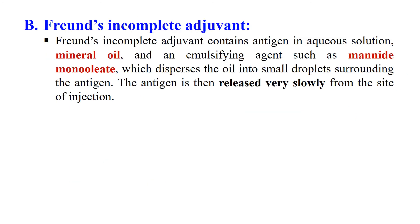The second example of an adjuvant is Freund's Incomplete Adjuvant. This adjuvant contains an aqueous solution, mineral oil, and an emulsifying agent known as mannide monooleate. This formulation disperses into oil, and these small droplets surround the antigen, causing the antigen to be slowly released from the site of injection. Due to this slow release, the time of the antigen inside the body increases and the immune system gets enough time to get activated, so immunogenicity is enhanced.